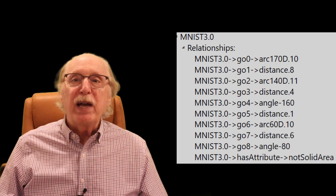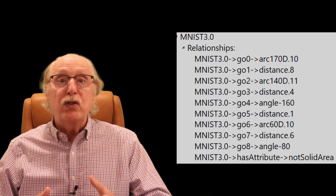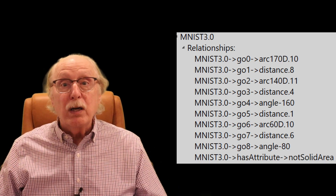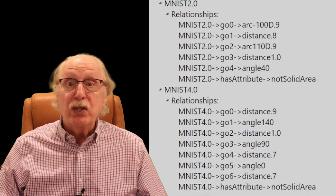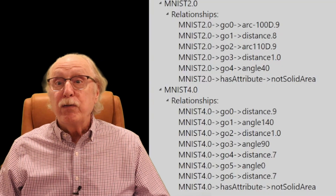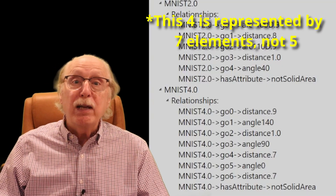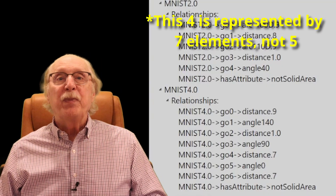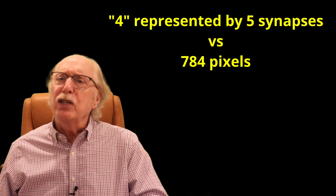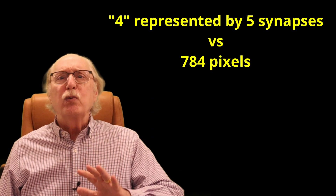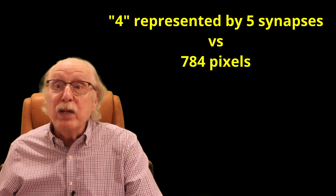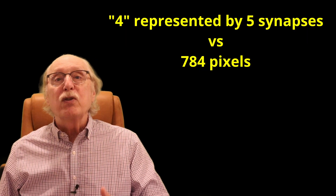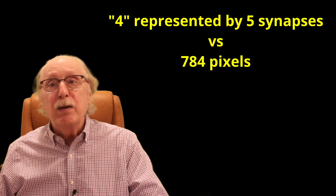So we'd expect that the three consists of links to a few arcs, and the four consists of links to three segments of different lengths joined by two angles with specific ranges. This means that the four can be represented by just five synapses, each to a specific visual primitive, rather than the 784 pixels of the input image.